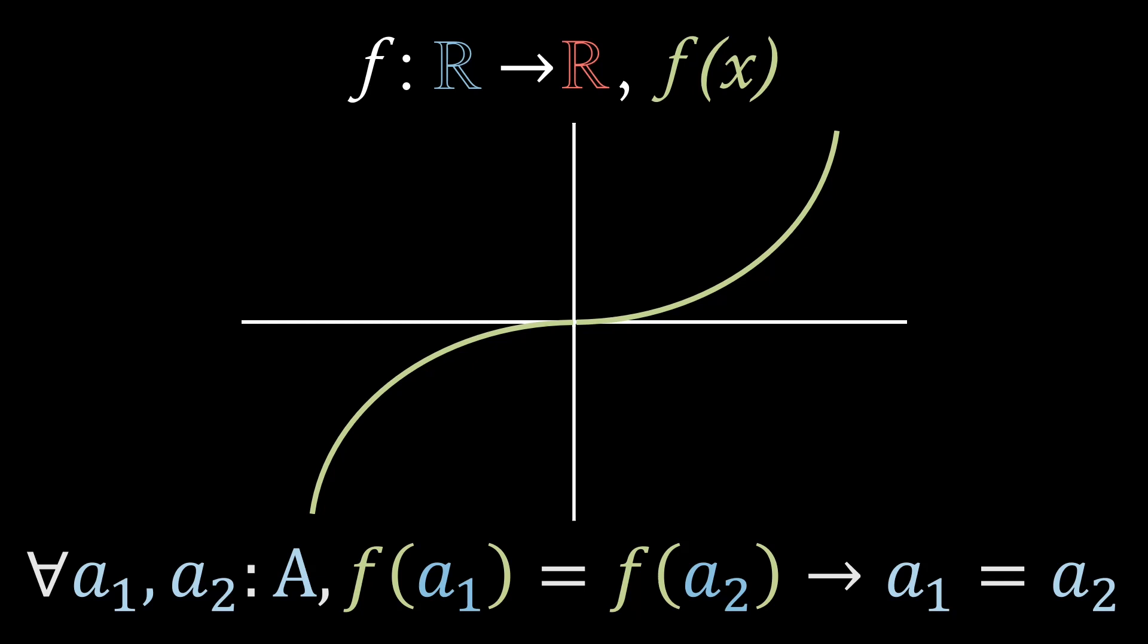Comparatively, f of x equals x squared is not injective, because we know multiple values in our domain will map to the same value of the codomain. For example, 4 can be mapped to from minus 2 or 2.